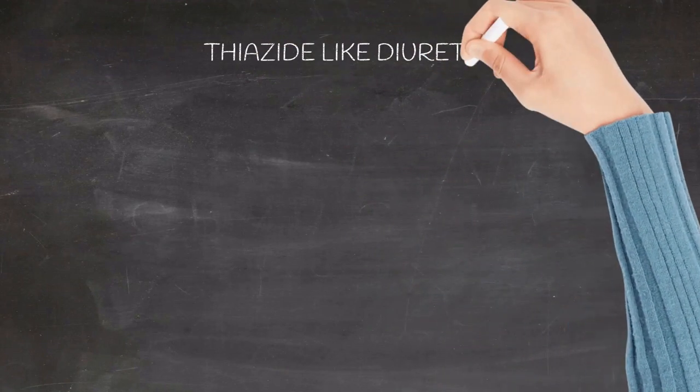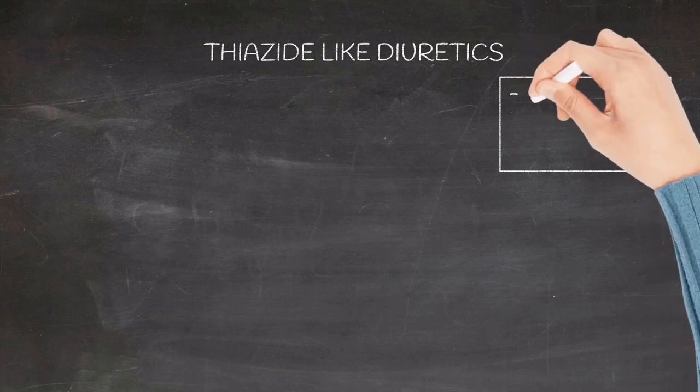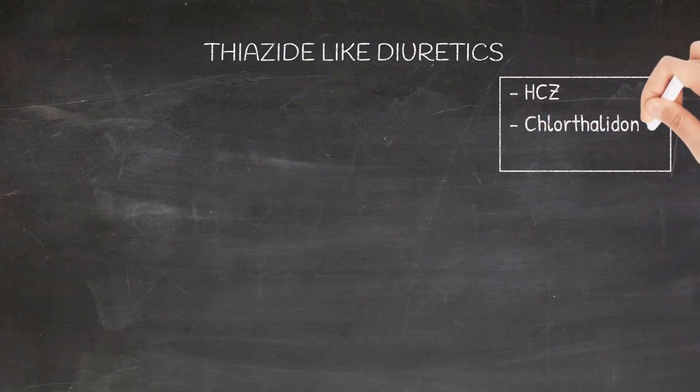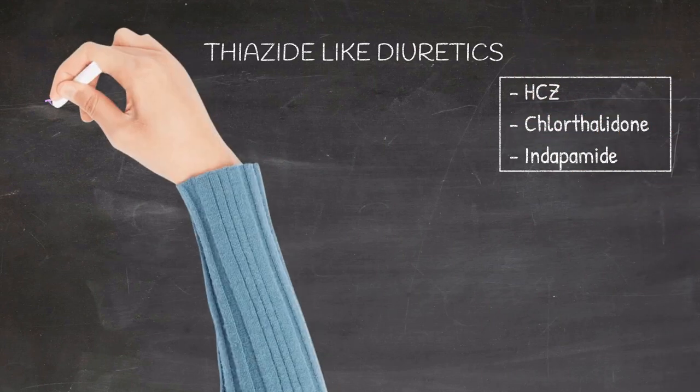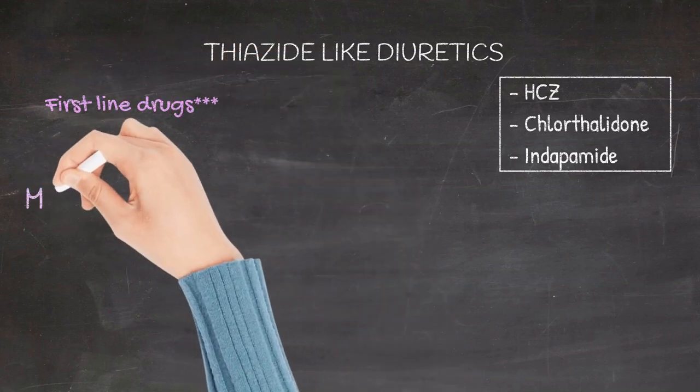Thiazide-like diuretics: a few examples of drugs from this group include hydrochlorothiazide, chlorthalidone, and indapamide. They are considered as one of the first-line drugs in the management of hypertension.